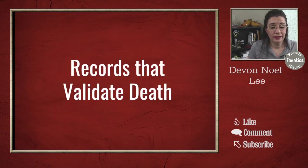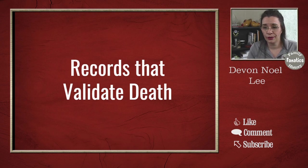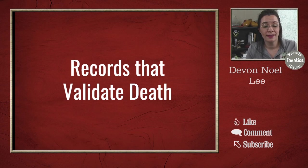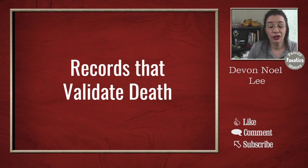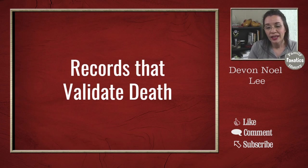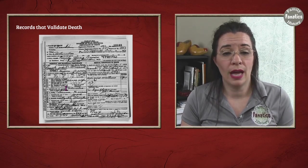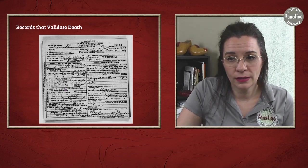Death records are used to validate deaths as well as give you clues to other information, and they are among some of the easiest records to find and access online, particularly on cemetery record websites such as Find a Grave and Billion Graves. There might be others — share your knowledge in the comments below. Now, there are a variety of death records to help validate the death of your ancestors, and depending on the time and place you're researching, you'll have access to different types. Death certificates are very helpful.